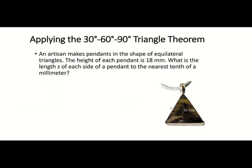Our last question involves an artist who makes pendants in the shape of equilateral triangles. All angles in an equilateral triangle are 60 degrees. The height of each pendant is 18 millimeters, perpendicular to the base. We want the length of each side. Drawing the height creates a 30-60-90 right triangle: the 30-degree angle is at the top, 60-degree at the base, and the height of 18 mm is opposite the 60-degree angle.